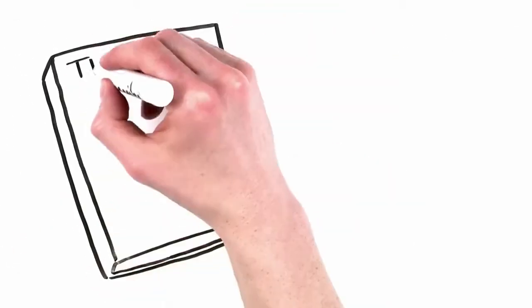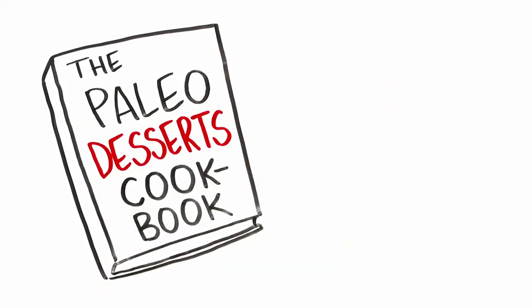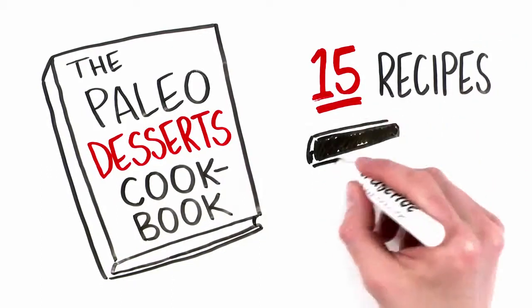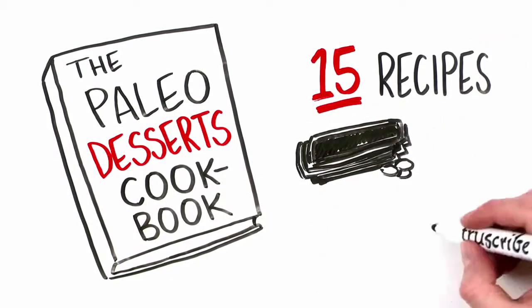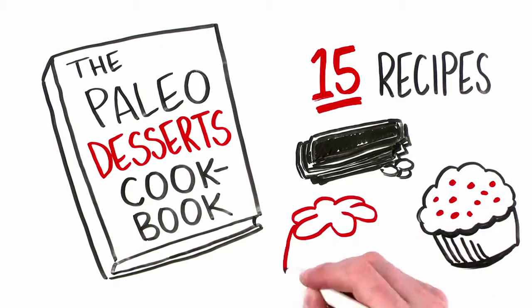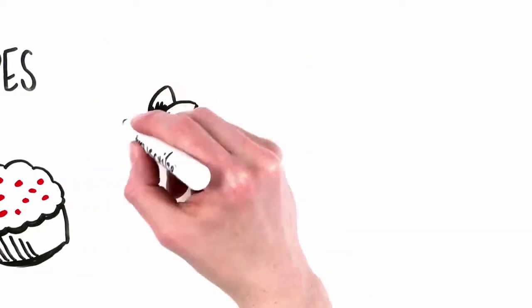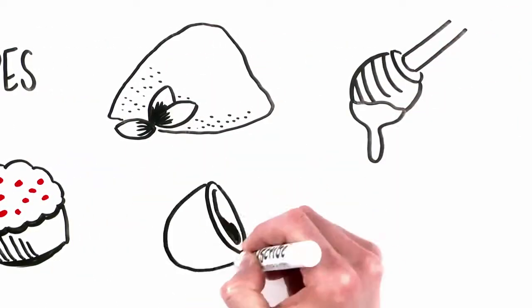Finally, we'll throw in the Paleo Desserts Cookbook to sweeten the deal. 15 mouth-watering dessert recipes like dark chocolate, almond bark, cranberry muffins, apple dumplings, made from natural ingredients like almond flour, raw honey, and coconut oil.